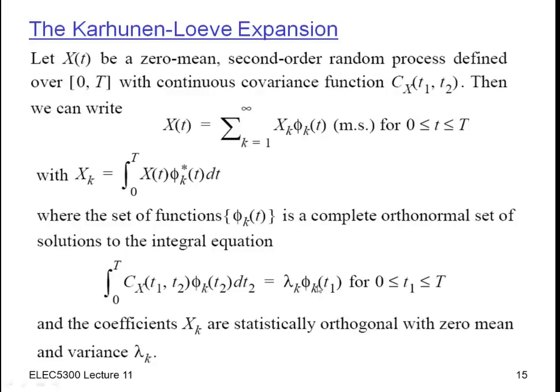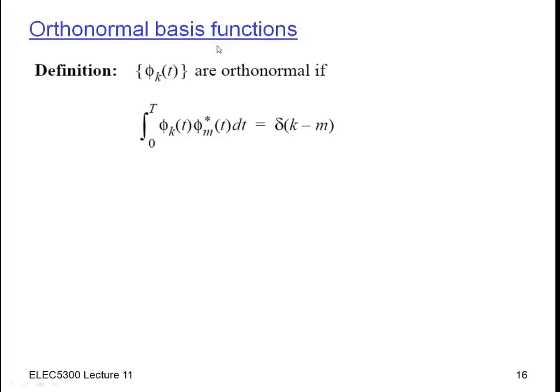The other thing we have to know about the phi sub k's is that they have to be orthonormal, in a complete orthonormal set. So what do I mean by that? The orthonormal here is really a combination of two properties. One of them is orthogonality. And that just means that if I take two of these where the k's are different, k and m, and I multiply them together, or multiply k times the complex conjugate of m, and then integrate them, I should get zero. So if k and m are not equal to each other, then I should get zero, which is indicated by this discrete time delta.